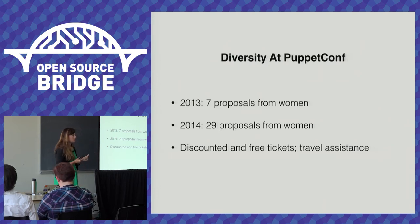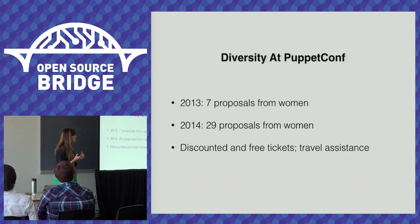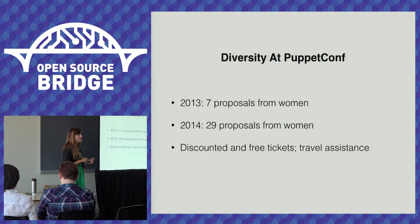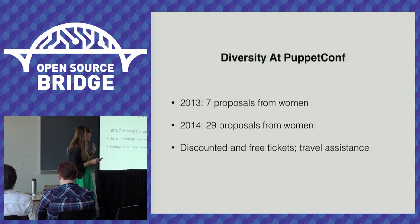About diversity at PuppetConf: in 2013 we got only seven proposals from women, which made us sad. So we developed a diversity program, and my coworker Kara worked really hard on it. We quadrupled the number of proposals in 2014. We offer free tickets to people underrepresented in tech, travel assistance, and we have a women's breakfast at PuppetConf every year that has grown tremendously year over year.